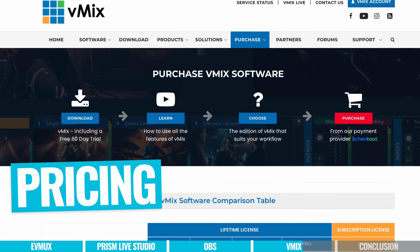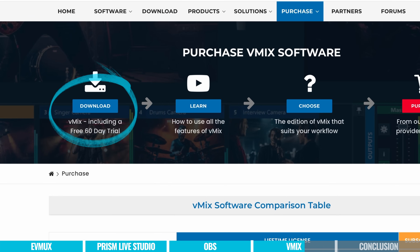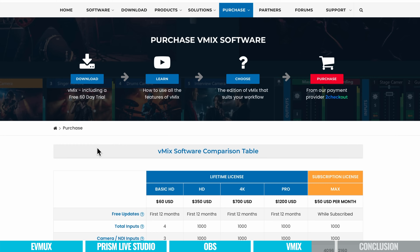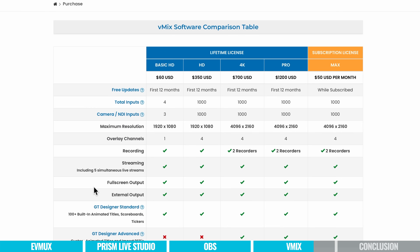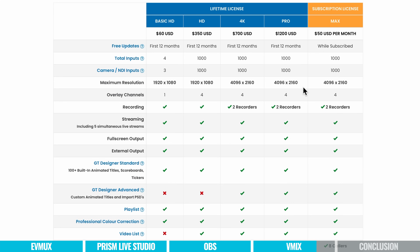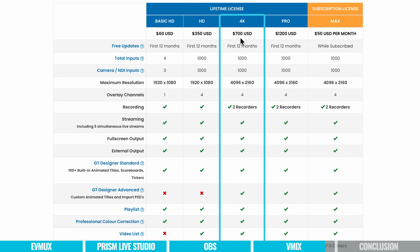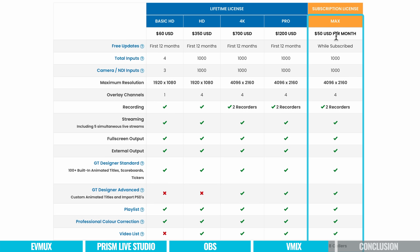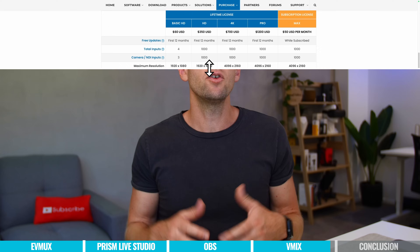In regards to pricing, there are a few different options. There is a 60-day free trial, which I'd recommend before diving into any of these — download the free version or trial, have a play around and see which is best for you, because there's no perfect solution for everyone. When you move to paid options, you can go a lifetime license — paying once — or a subscription license. You've got everything from a $60 one-time purchase for the basic HD license through to a 4K license for $700, or $50 a month on their max subscription, which unlocks all the functionality. For the top-end professional stuff, $50 per month is pretty cheap when you look at other options.